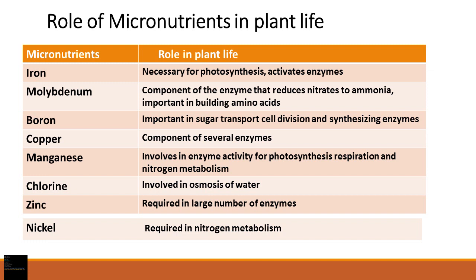Molybdenum is a component of the enzyme that reduces nitrate to ammonia, converting nitrate into ammonia, and is important in building amino acids. Boron is important in sugar transport, cell division, and synthesizing certain enzymes. When plants make their food in the form of sugar, it is transported to all parts of the plant where needed, and any extra sugar is stored. Boron is very important in this sugar transport process.